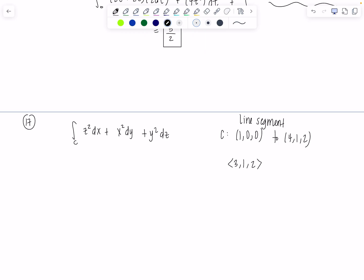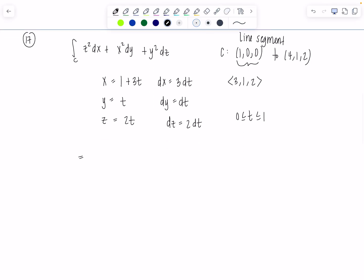And then initial point is 1, 0, 0. So we have X is 1 plus 3T. Y is just T. Good. And Z is 2T. And then let's find DX, DY, DZ now. Do we need them all? Yeah. So DX is 3 DT, DY is DT, and then DZ is 2 DT. Good. And then T is between 0 and 1. So then your integral is going to go 0 to 1. It's just that one line segment, right? That's it.